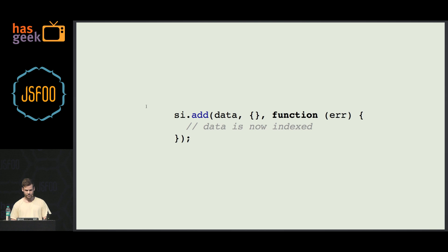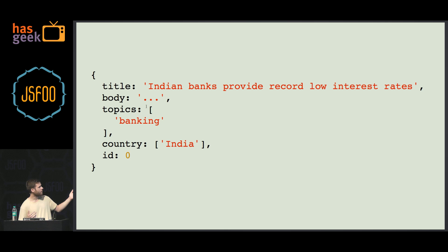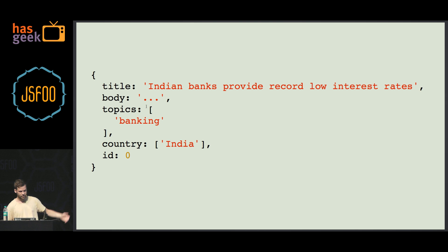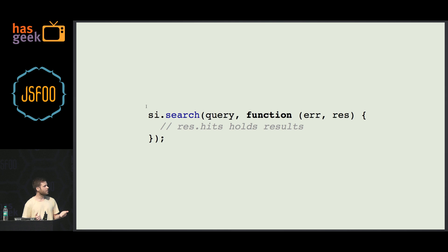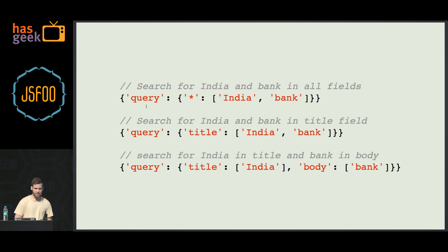This is what a typical document looks like. None of the fields are mandatory, but if you don't specify the ID field, we'll generate one for you. A document might be: 'Indian banks provide record low interest rates', with a topic and a country. Searching this data is simple — you do si.search() with a query object and a callback. If error is null, result.hits holds an array of hits. The query object lets you search for 'Indian bank' across all fields using a star, or specify a given field like 'title' with value 'Indian bank'. You can also search in different fields — for example, a document that has 'Indian' in the title and mentions 'bank' in the body. This is an AND query; we don't currently support OR queries.